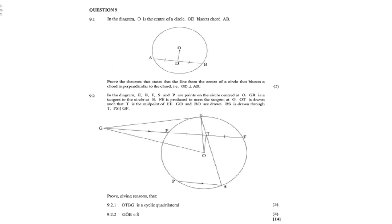And PS is parallel to GF. Prove, giving reasons that OTBG is a cyclic quadrilateral, and angle GOB is equal to angle S.